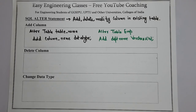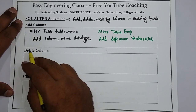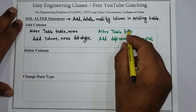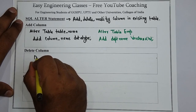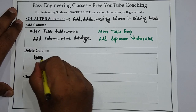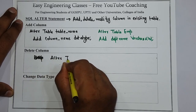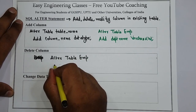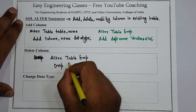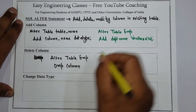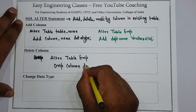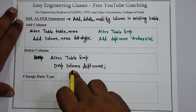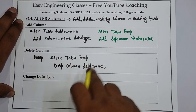Now let's see how you can delete or drop a column from a table. Suppose I want to drop this particular column from employee. I will write: ALTER TABLE EMP, then DROP COLUMN, and then the name of the column, which is department_name. By this we are dropping or deleting a column from the table.